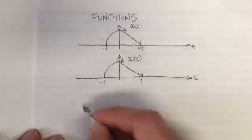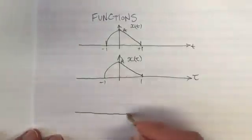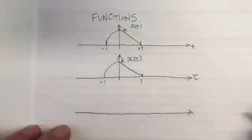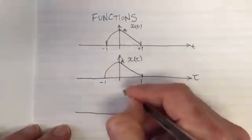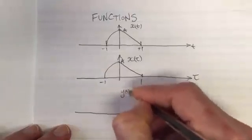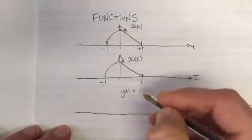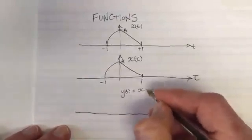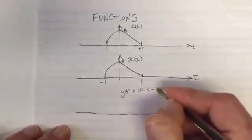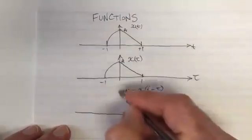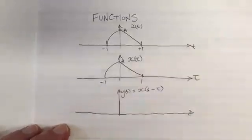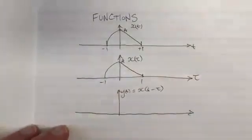Let's look at shifting the function. We're going to have a new function y of t, and let's say that is going to equal x of t minus τ. I'm deliberately using τ here because it's going to be important when we talk about convolution.